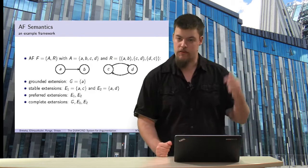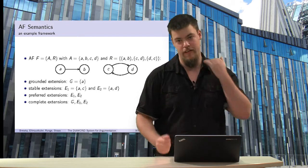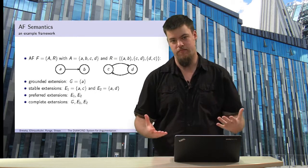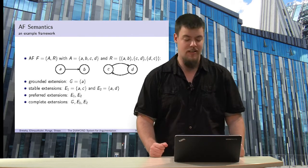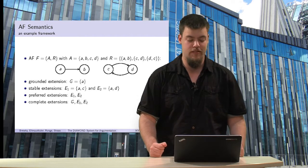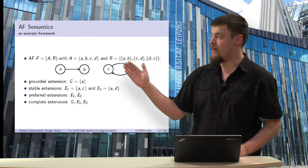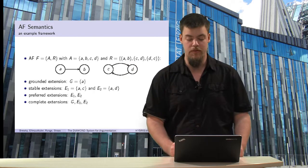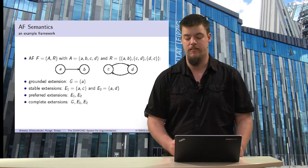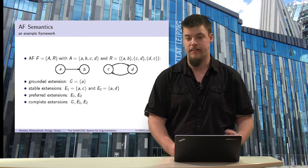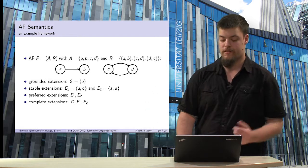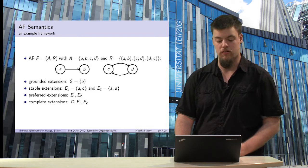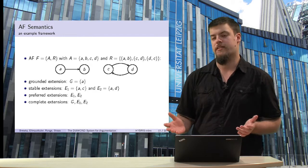On the other hand, take A. A has no attacker, so it can defend against every attack. Therefore, A alone is a complete extension. In addition, A and C together is also complete, because C defends itself against D. And A and D is, for the same reason, also a complete extension.